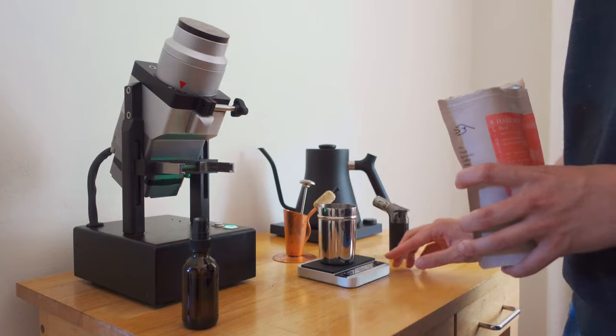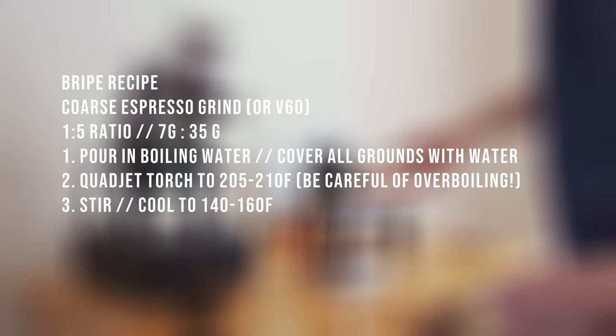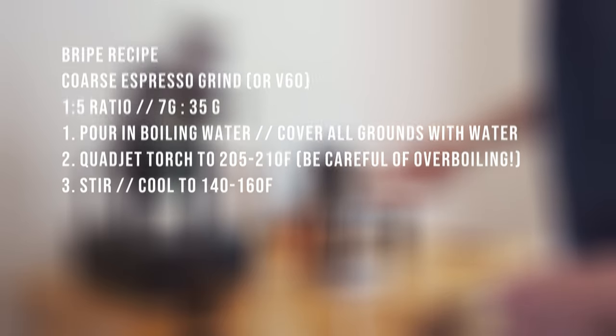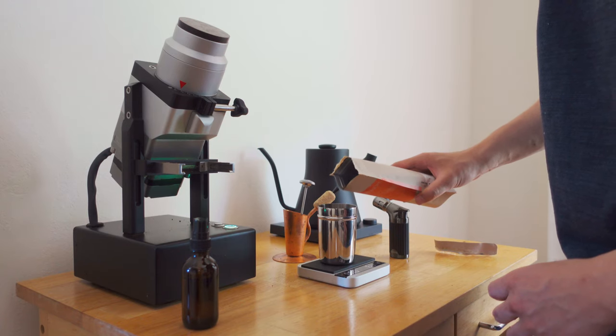Next I'll be weighing out 7 grams. We'll be doing a 1 to 5 ratio bripe, so 7 grams of coffee to 35 grams of off-the-boil hot water.